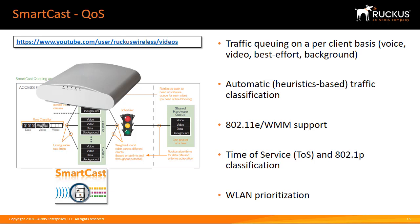SmartCast delivers superior performance — it eliminates jitter and delay for video and voice, providing quality of service and outstanding user experiences. For guaranteed multicast streaming, SmartCast is the only proven QoS system for IPTV, converting multicast traffic to unicast. This delivers video traffic to each subscriber at the highest data rate that client is capable of supporting, providing optimal utilization.